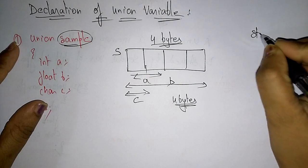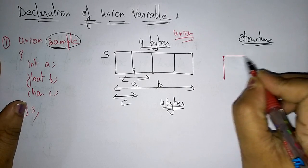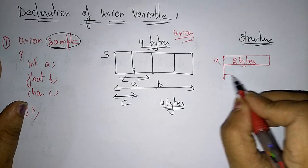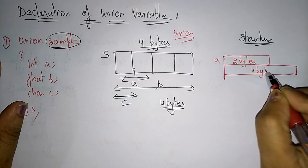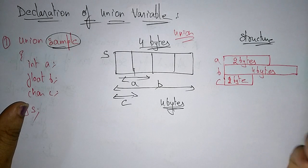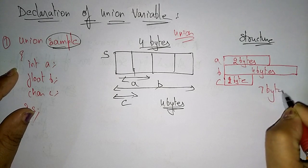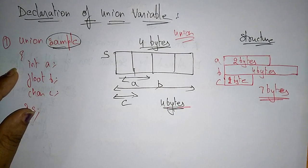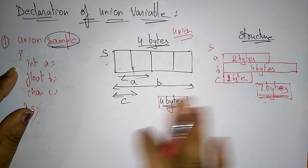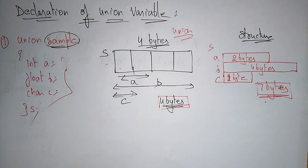Here you can see the difference between structure and union. In the structure, two bytes are occupied by the integer variable, four bytes by the float variable, and one byte by the character variable — totaling seven bytes required for structure variables. So for a structure variable it requires seven bytes, whereas for a union variable it requires only four bytes. That is the main difference: union requires only four bytes whereas structure requires seven bytes to store the data items.